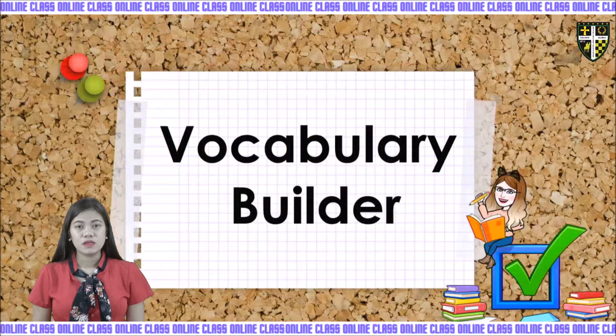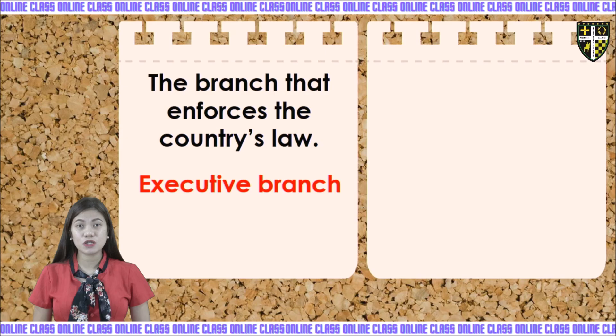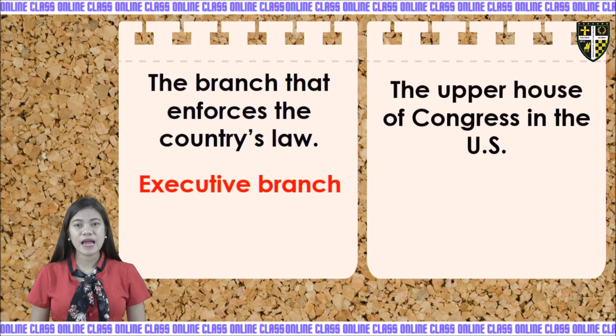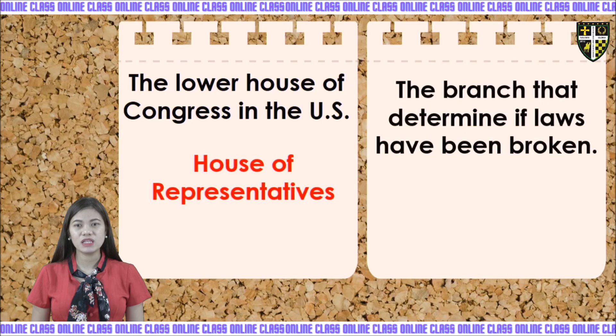Now let us answer the vocabulary builder part. The branch that enforces the country's law is called executive branch. The upper house of Congress in the U.S. is called Senate. The lower house of Congress in the U.S. is called House of Representatives. The branch that determines if laws have been broken — the answer is judicial.